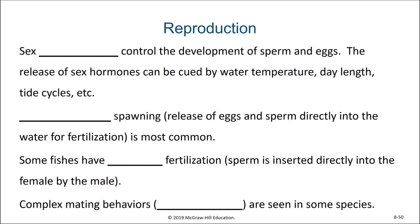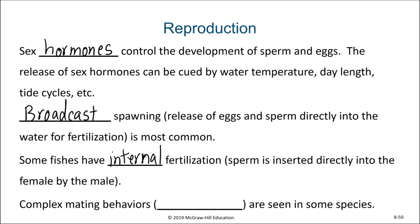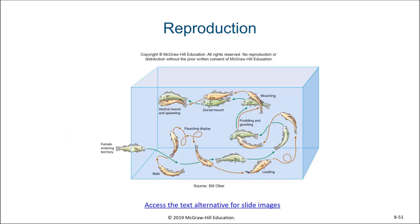When it comes to reproduction, sex hormones control the development of sperm and egg. The release of sex hormones can be cued by water temperature, day length, tidal cycle, among others. Broadcast spawning is the release of sperm and egg directly into the water for fertilization, and this is most common for marine fish. Some fish do have internal fertilization, in which the sperm is inserted directly into the female by the male. Some species have complex mating behaviors called courtship, which can be very choreographed — from the female entering the territory to the male catching her attention, they swim together, and finally copulation occurs.